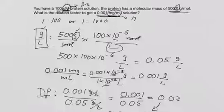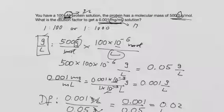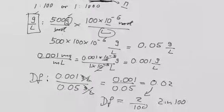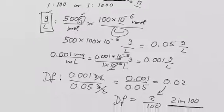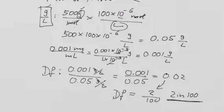If you did this the other way around by converting 0.001 milligram per milliliter to molar, you would also get exactly this value, 2 in 100, and that is basically the answer to this question, that is your dilution factor. So I hope this makes sense and thank you very much for watching.